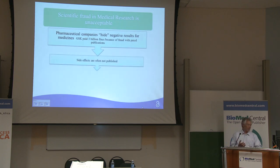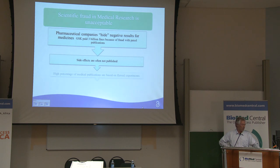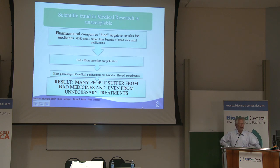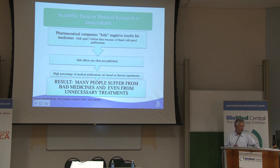Open access versus scientific fraud — especially in medical research — is an important point. Pharmaceutical companies can hide results for medicines because they do selective publishing. Side effects are often not published, and the result is that many people suffer from bad medicines and even from unnecessary treatments. There is now a case in the UK going on against GlaxoSmithKline regarding an influenza medicine.